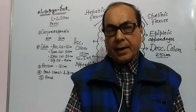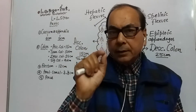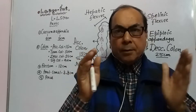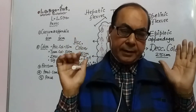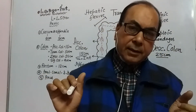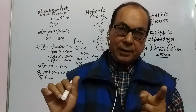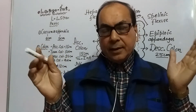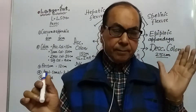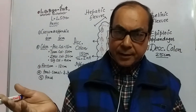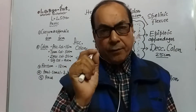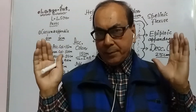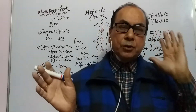The Large Intestine is the part which has a length of approximately 1.5 meters, but it is much wider compared to the Small Intestine. The Small Intestine's width is less but its length is much greater — approximately 6.5 meters. So we can say: Small means 6.5 meters, Large means only 1.5 meters, but Large is much wider compared to the Small Intestine.